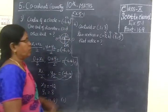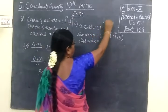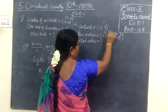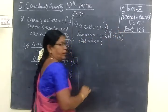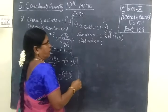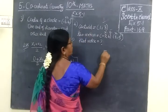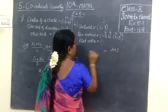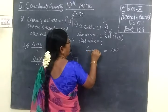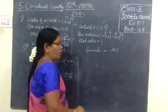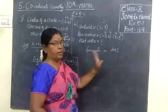Next is centroid given, two vertices given. You are finding the third vertex. Here also answer given, so this side you are writing answer and this side you are writing formula. So formula write this side, answer that's it.